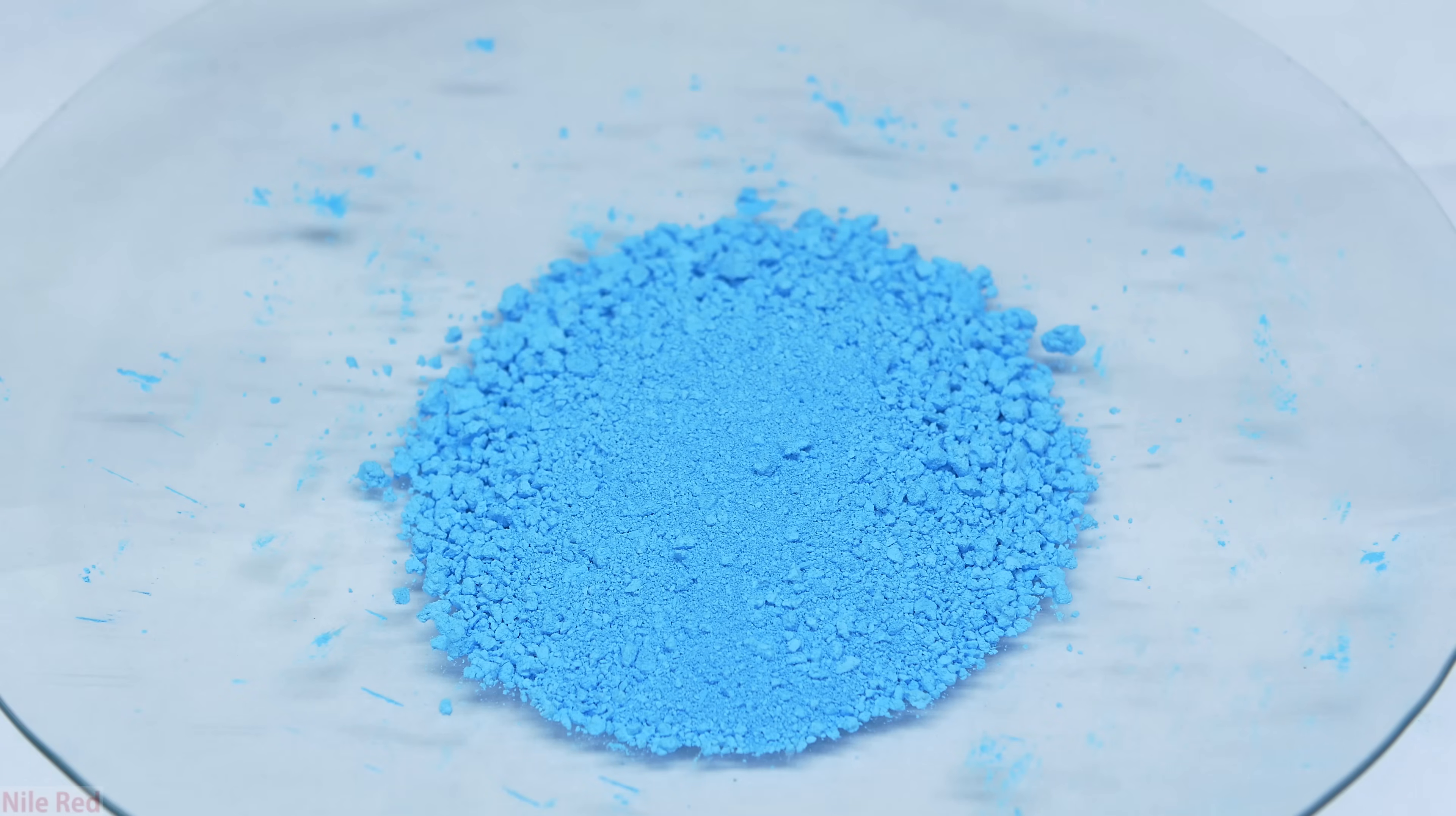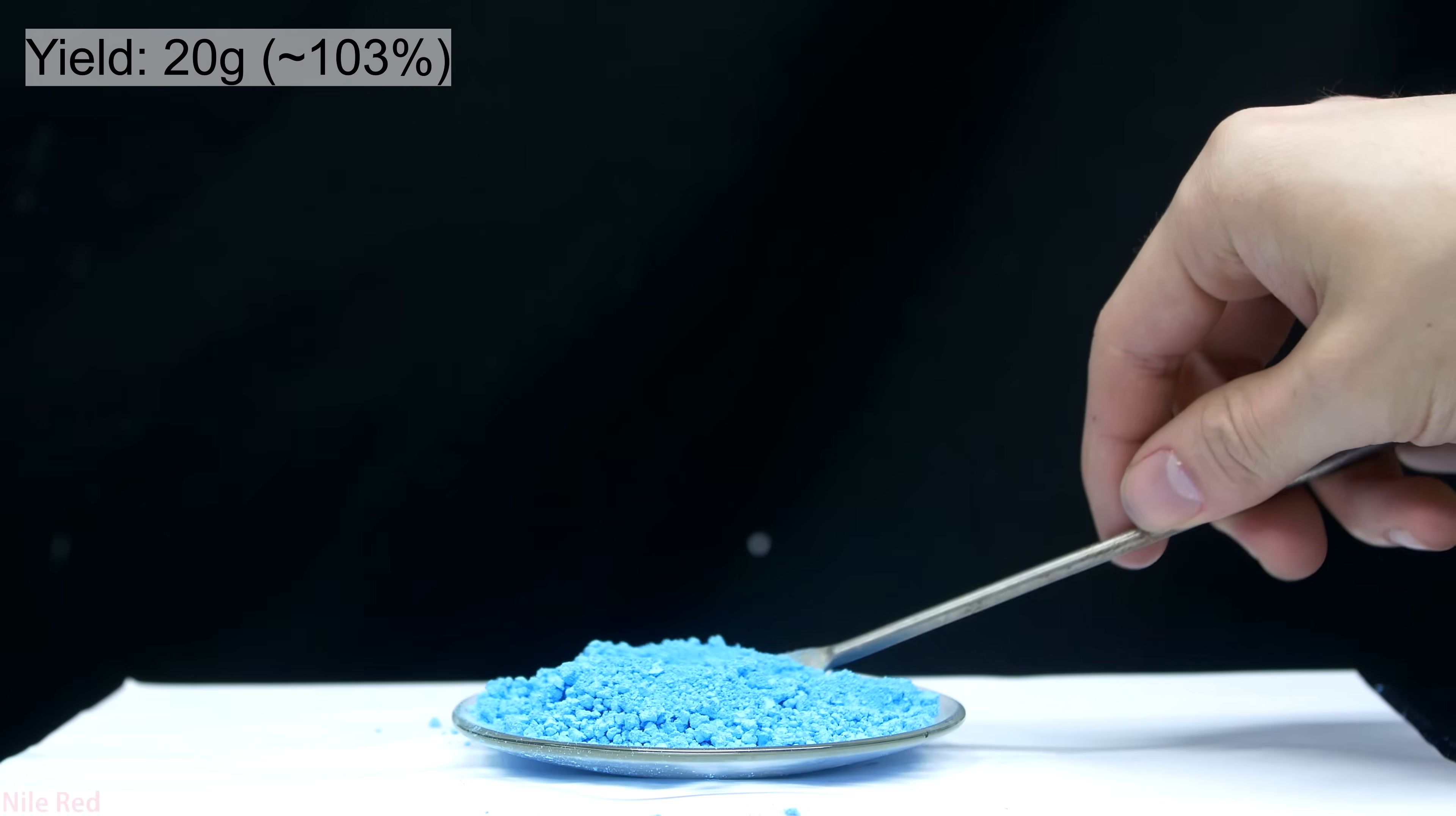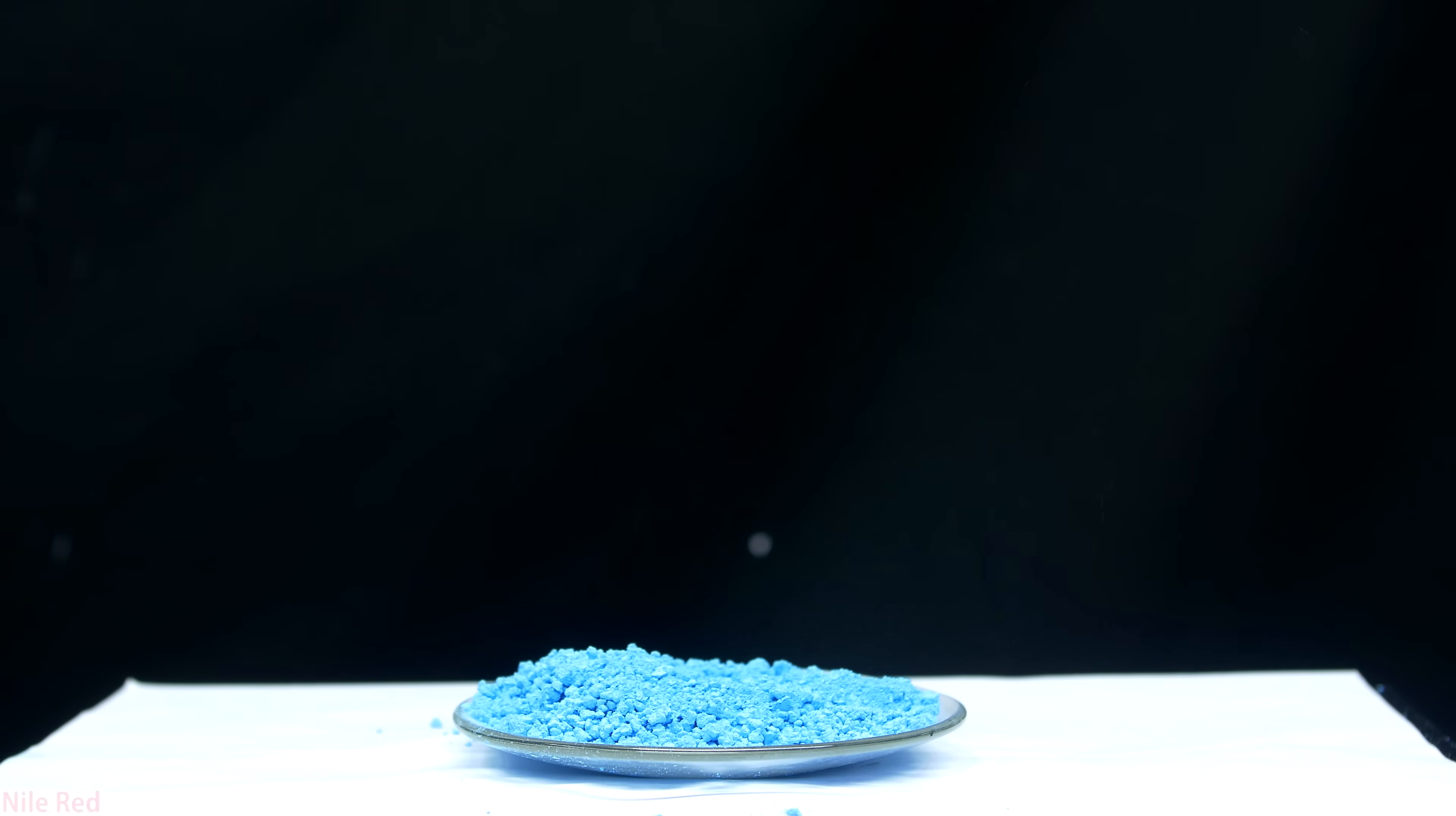Eventually I was left with nice, light, blue copper hydroxide powder. The yield in the end was about 20 grams, which is actually above 100% yield, which to me indicates that the powder is still probably a little bit wet. This is okay though, because we're using the copper hydroxide to make Schweizer's reagent, which requires mixing it with aqueous ammonia.